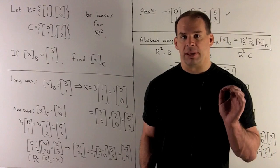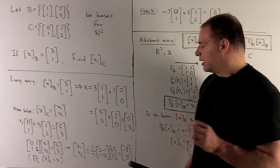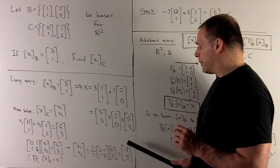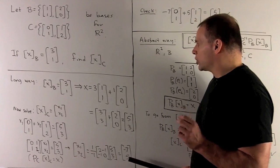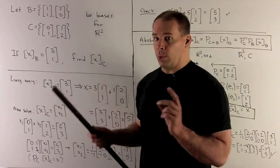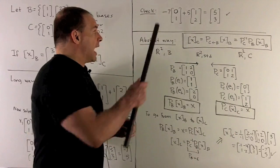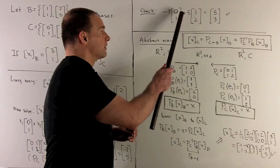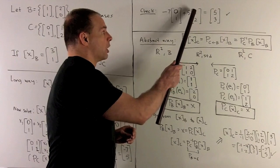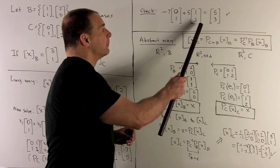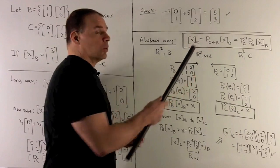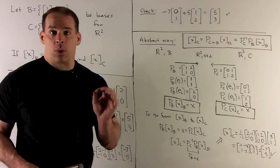Now, the check is just going to be this. We're going to construct the linear combination using [-7,5] with respect to C. What do we get? So that's going to be -7 times the first vector, which is [0,1], plus 5 times the second vector, which is [1,2]. What comes out? We're going to get [5,3], which is our X. So the check works.